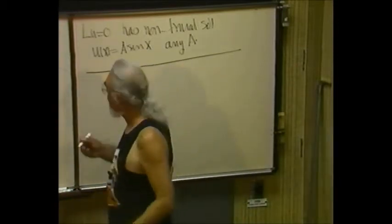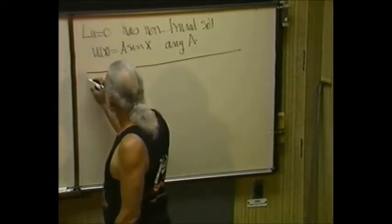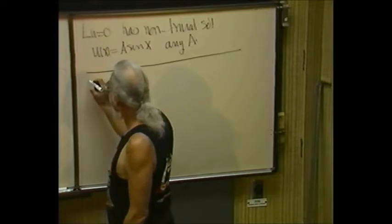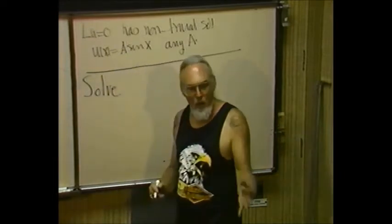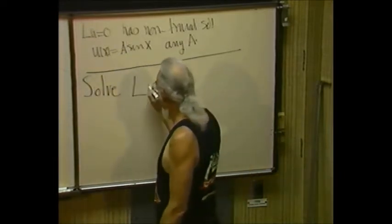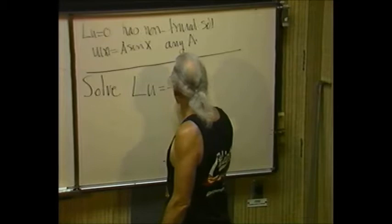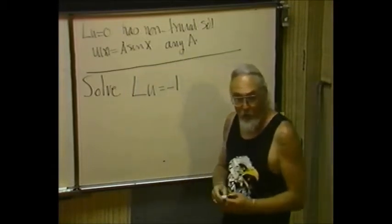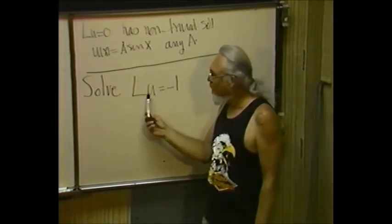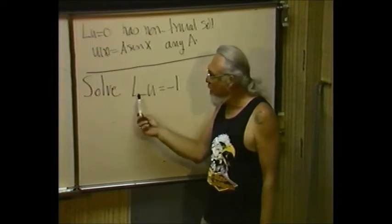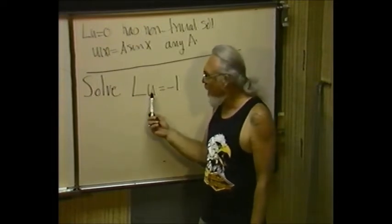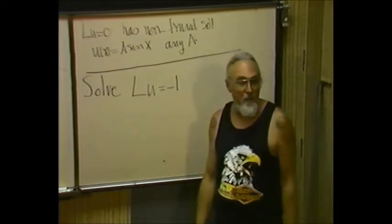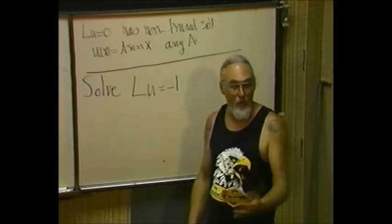Now, the next one is equals negative 1. And so now, part B is let's solve, let's find all solutions to L of U equals minus 1. I don't have to redo the initial condition, the boundary conditions, because the boundary conditions are tied up in here. If I'm going to solve this, L only looks at things that satisfy the boundary conditions. So any solution must.